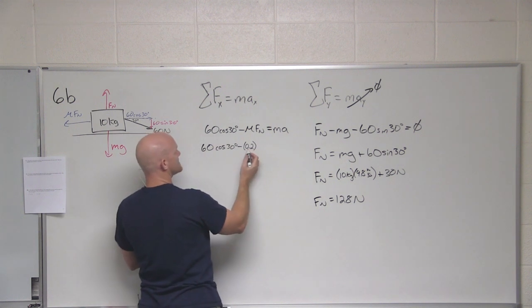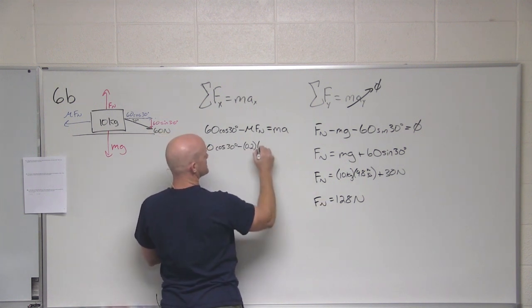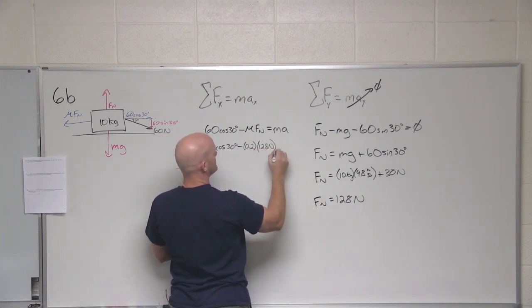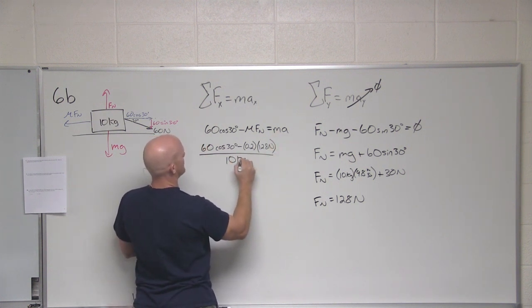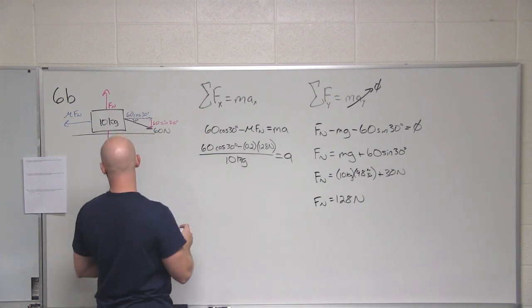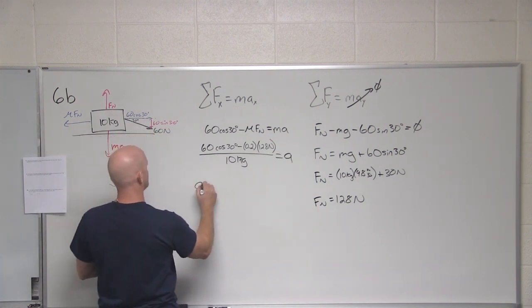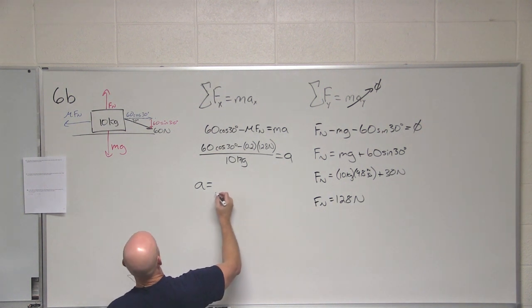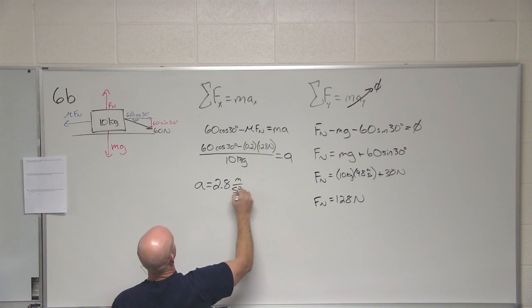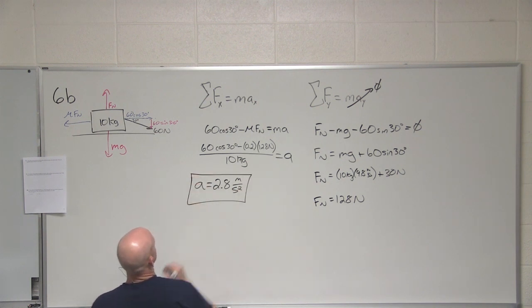The coefficient of kinetic friction is given as 0.2. Our normal force is 128 newtons. I'm going to bring the mass over, divide by that completely, to get our acceleration. Can anybody get me that value of our acceleration in this case? Yeah, 2.8 meters per second squared.